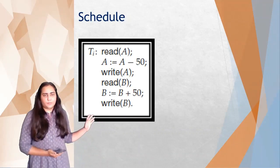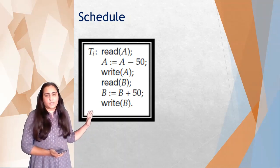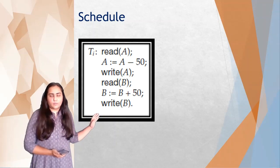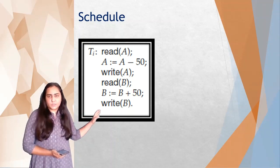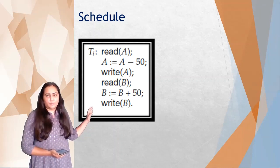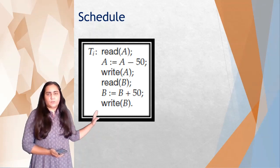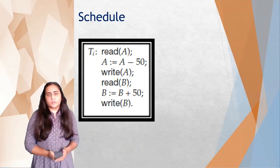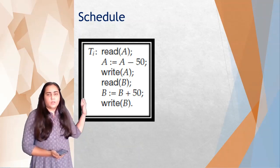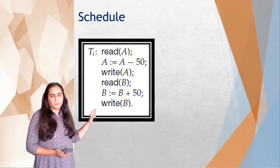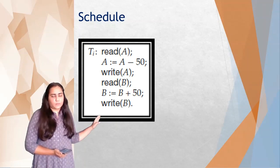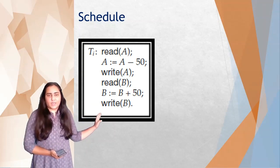First of all we'll see what schedules are and we'll see an example of a schedule. Consider transaction T1 — it has two variables A and B. What this transaction does is it reads the value of A, subtracts 50 from it, writes the value back, then reads the value of B, adds 50 to it, and writes it back.